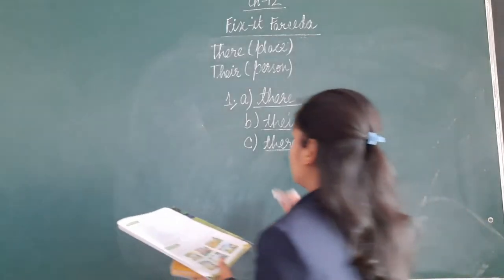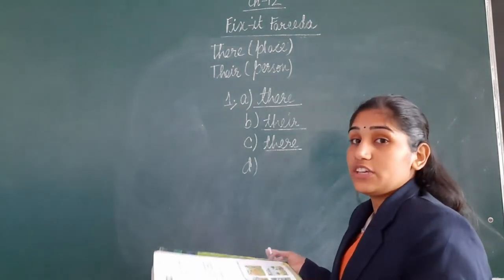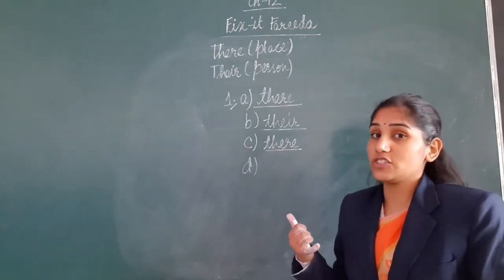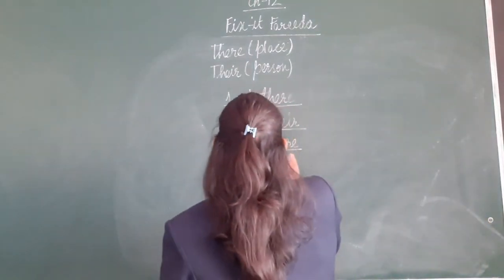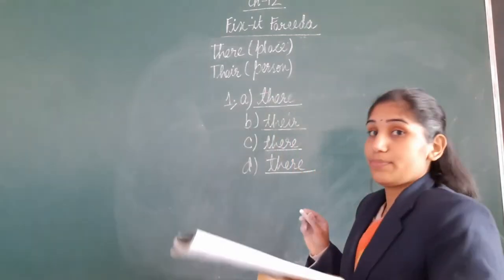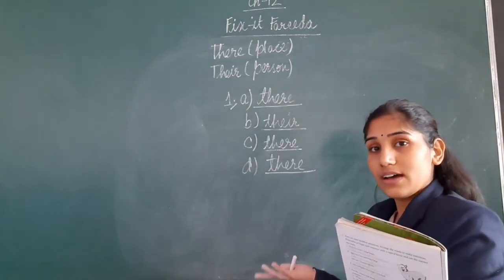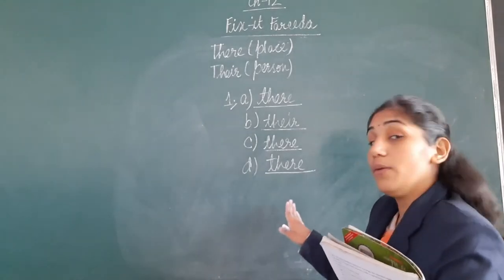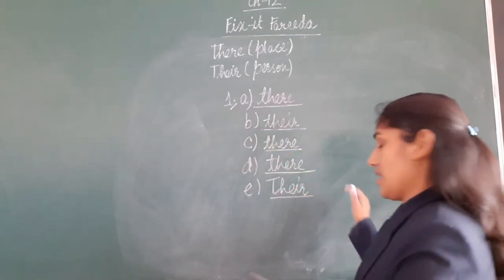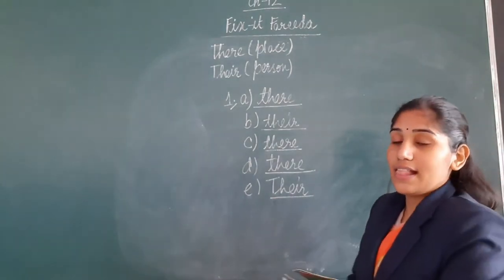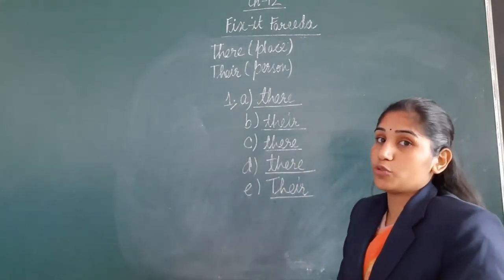Part D: 'My sister asked me, by what time will you reach there?' It means a place. So here also we will use T-H-E-R-E: there. Part E: '___ house is very big.' We are talking about someone's house, which means we will refer to a person. So E part we will write T-H-E-I-R: Their. Write with a capital letter as the blank is at the beginning of the sentence.